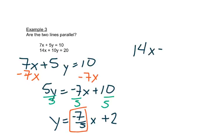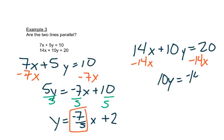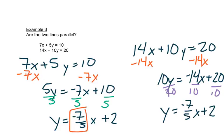So we'll do the same thing to the other equation. I'll subtract 14x. Then I'm going to divide both sides, or each piece, by 10. That gives me y. This one I'll reduce. So it gives me negative 7 fifths x plus 2.